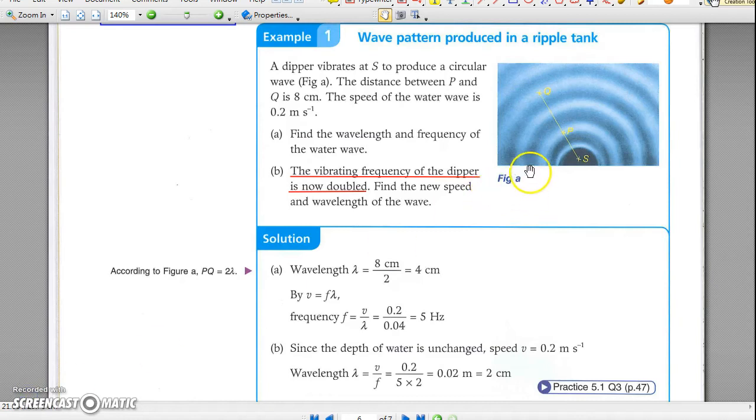In Example 1, you may measure the wavelength from the picture directly. In part B, the frequency of the dipper is doubled. The wavelength will be halved, as the wave speed does not change.